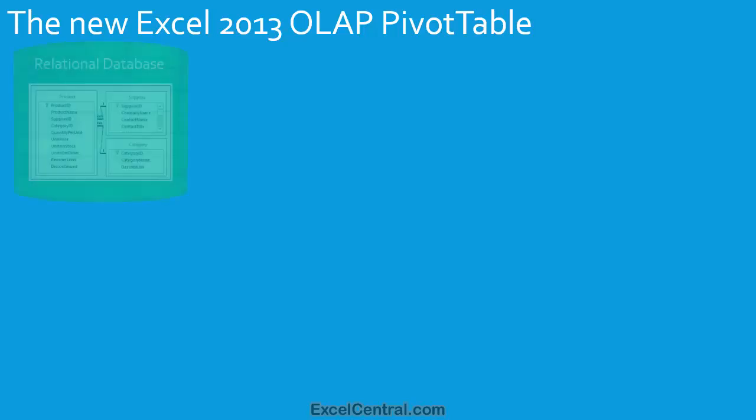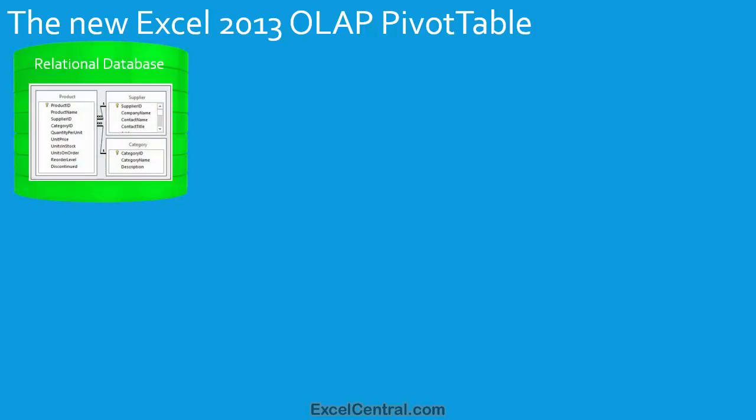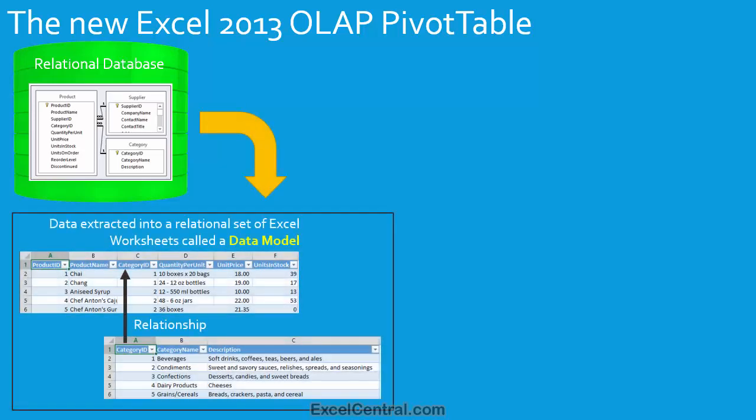Let's look at the same database we considered earlier and see how we'd extract data for an OLAP pivot table from it. Instead of a single data extract, we'd simply extract the tables. Then, inside Excel, we'd join the tables together with relationships. And when you have several Excel tables joined together with relationships, you collectively call this a data model. Once data resides in a data model, you can use the data model as the source for an OLAP pivot table.